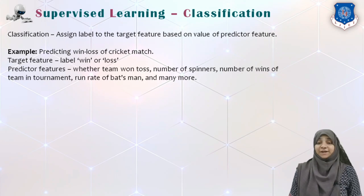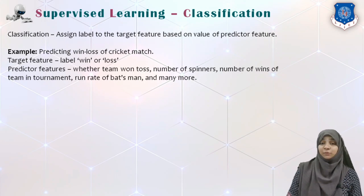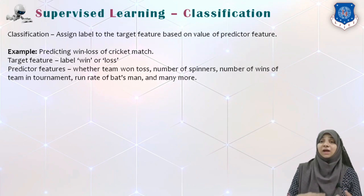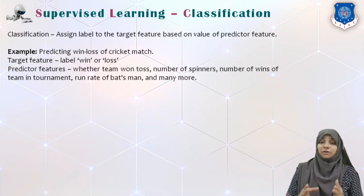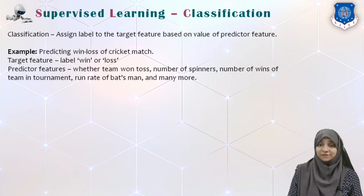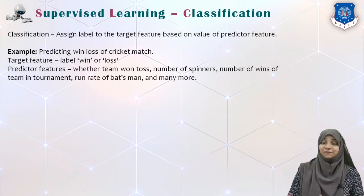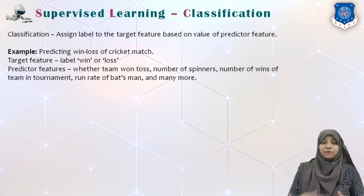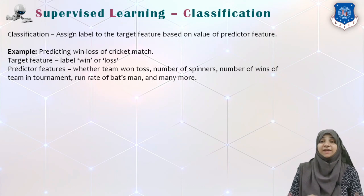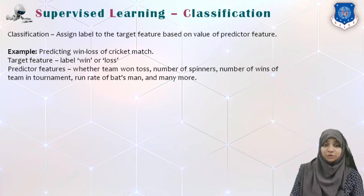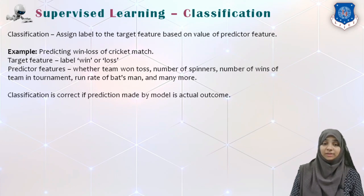The input features of this particular problem include how many previous wins there are, whether the team has won the toss, how many swingers are there, the performance of each player, number of wins in a tournament, run rate of batsmen, and many more parameters that can be taken as predictor features.